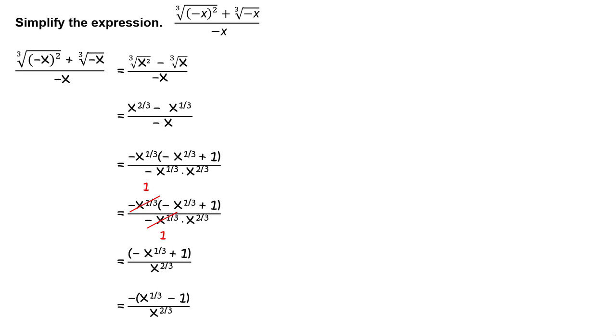Factor out a negative from the expression in the numerator. You will get negative of the quantity x raised to 1 third minus 1, divided by x raised to 2 thirds.